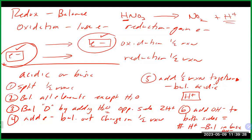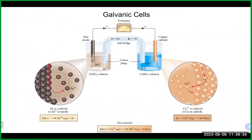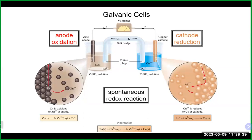We did a number of balancing examples. What we're going to focus on now is really the heart of this chapter, which is galvanic cells. Galvanic cells are really redox reactions — an oxidation and reduction reaction taking place.